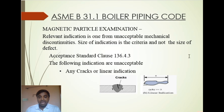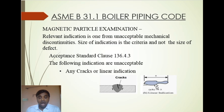The following indications are unacceptable in magnetic particle examination: any cracks or linear indications. Magnetic particle examination detects surface defects, so if a crack is found on the surface it is not acceptable. A linear indication is one where the length of the defect is always three times or more the width — this is the general rule for linear indication.